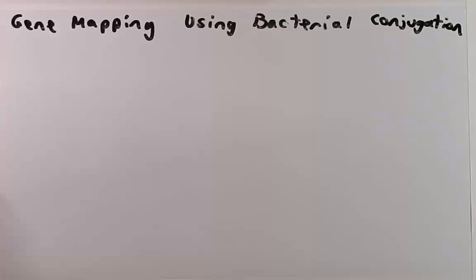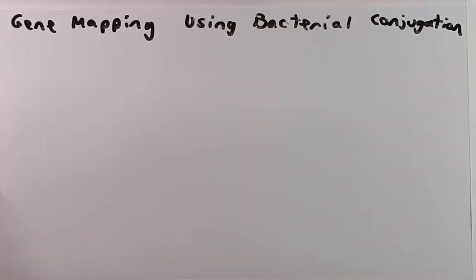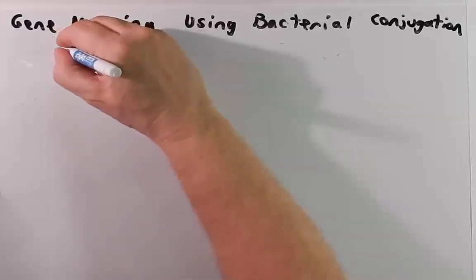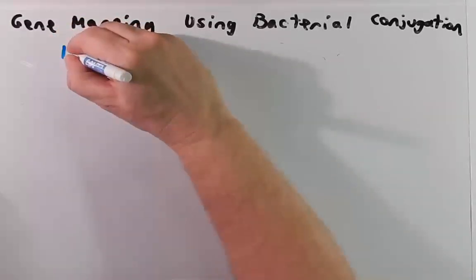Usually when scientists map genes using bacterial conjugation they don't know the order of the genes. But for this exercise we're going to start with a known order of genes in this particular bacterial strain. That will be easier as we're learning some of these concepts. Later on you may need to go back and look at raw data and be able to figure out how to map the genes.